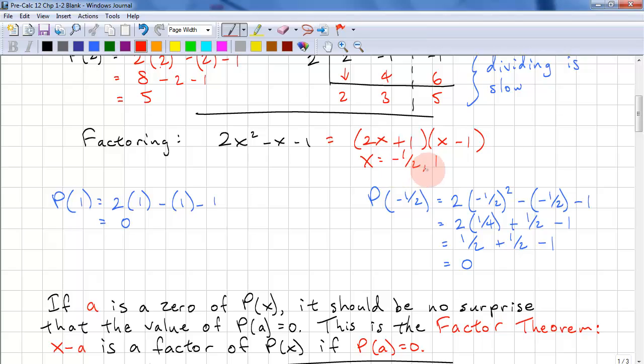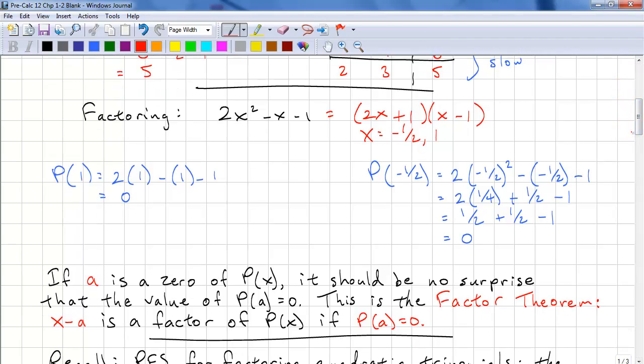So let's check to see that these are factors. We just substitute these in. Let's do the easy one first. 2 times (1) squared minus (1) minus 1 is 0. So 0 is the remainder, which is what you would expect from a factor.